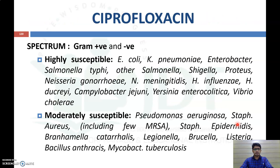Fluoroquinolones are active against both gram-positive and gram-negative organisms. Organisms highly susceptible to ciprofloxacin include E. coli, Klebsiella pneumoniae, Enterobacter, Salmonella typhi, Salmonella, Shigella, Proteus, Neisseria gonorrhoeae, Neisseria meningitidis, and Haemophilus influenzae. Moderately susceptible organisms include Pseudomonas aeruginosa, Staphylococcus aureus, and Staphylococcus epidermidis.